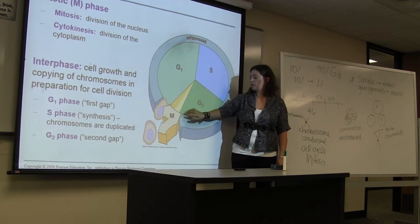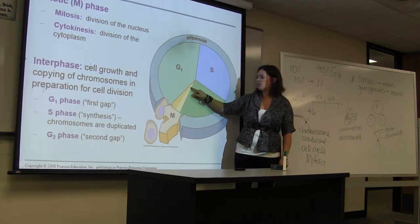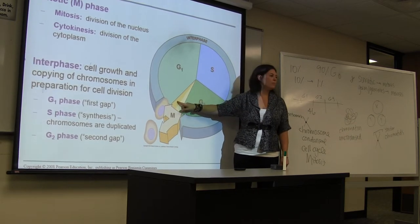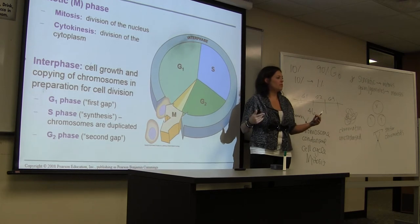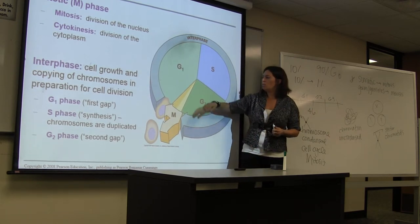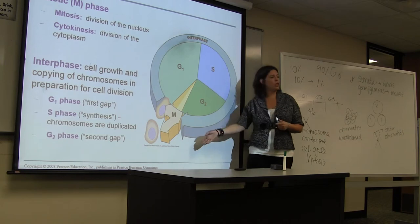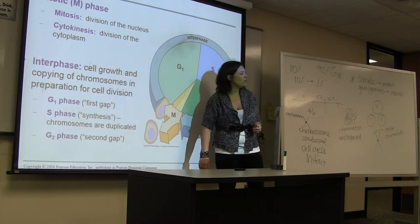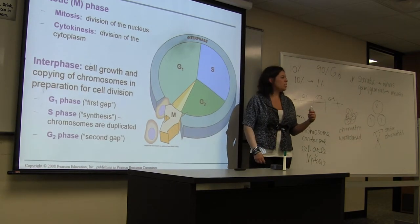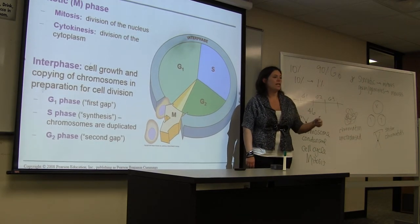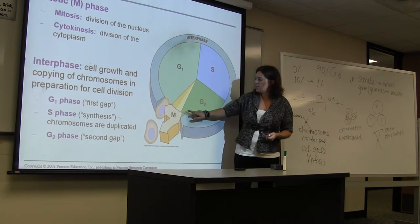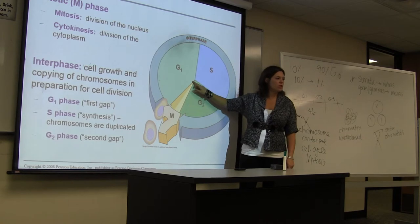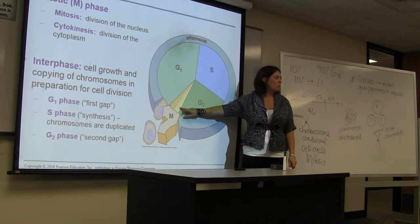The M phase is not just mitosis but is also followed by cytokinesis. Mitosis is going to occur first, and then that's quickly followed by the division of the cytoplasm, or cytokinesis. Once the cell has gone through the complete turn of the cell cycle, it will leave the cell cycle and go back into G0 — the non-dividing stage.